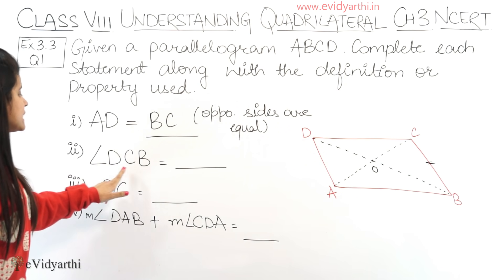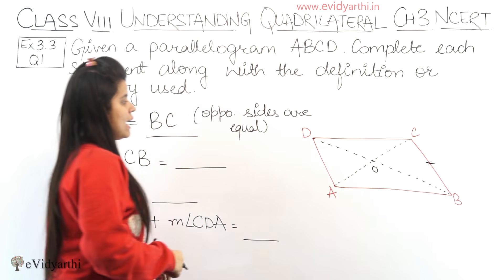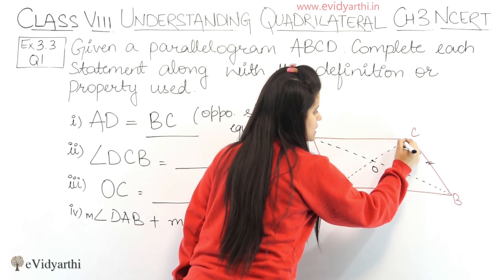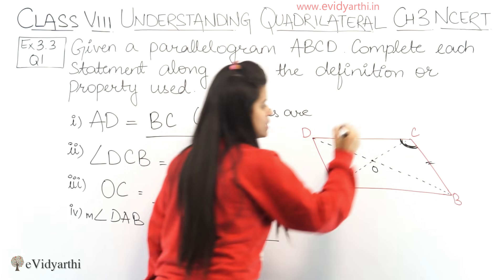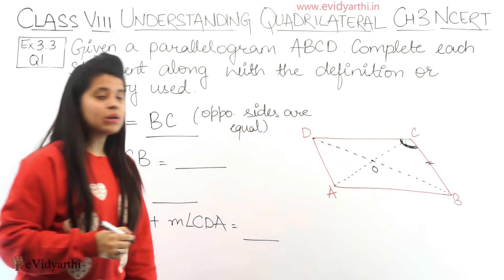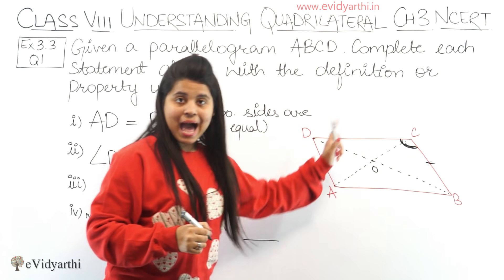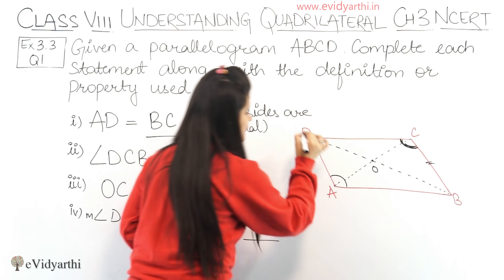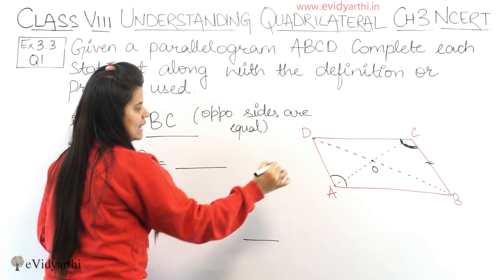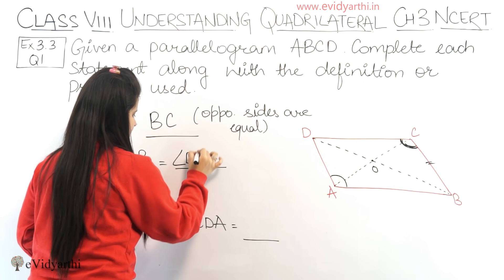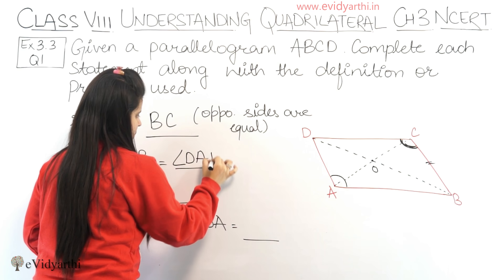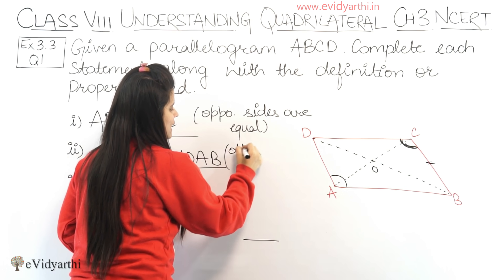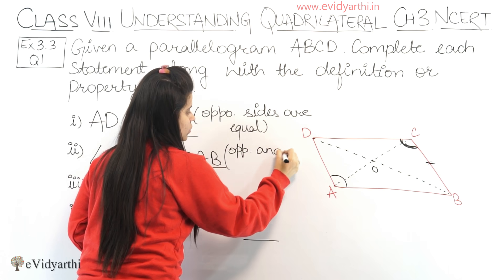Next we have angle DCB. Angle DCB means this full angle, and this angle will be equal to angle DAB. The reason is that in a parallelogram, opposite angles are also equal.